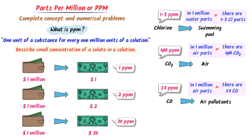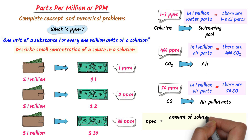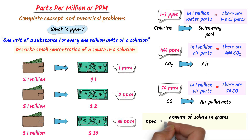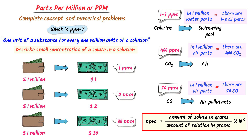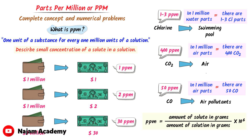In the light of these examples, the formula of ppm is: amount of a solute in grams divided by total amount of a solution in grams, multiplied by 10 raised to the power 6. We will use this formula to crack any numerical problem of ppm. Just remember that ppm is a useful way to measure small amounts of substances in everyday life, from food and drinks to air and water quality.